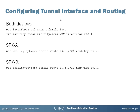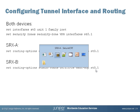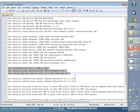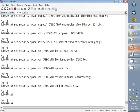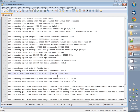Now we need to configure the tunnel interface and routing. On both devices we configure the st0 interface with unit 1 and put family INET on it, then place st0.1 into the VPN zone. We then configure static routes: on SRX-A we tell the device that Network B (10.2.2.0/24) is behind the tunnel interface, and on SRX-B we configure the route to Network A through the tunnel interface.